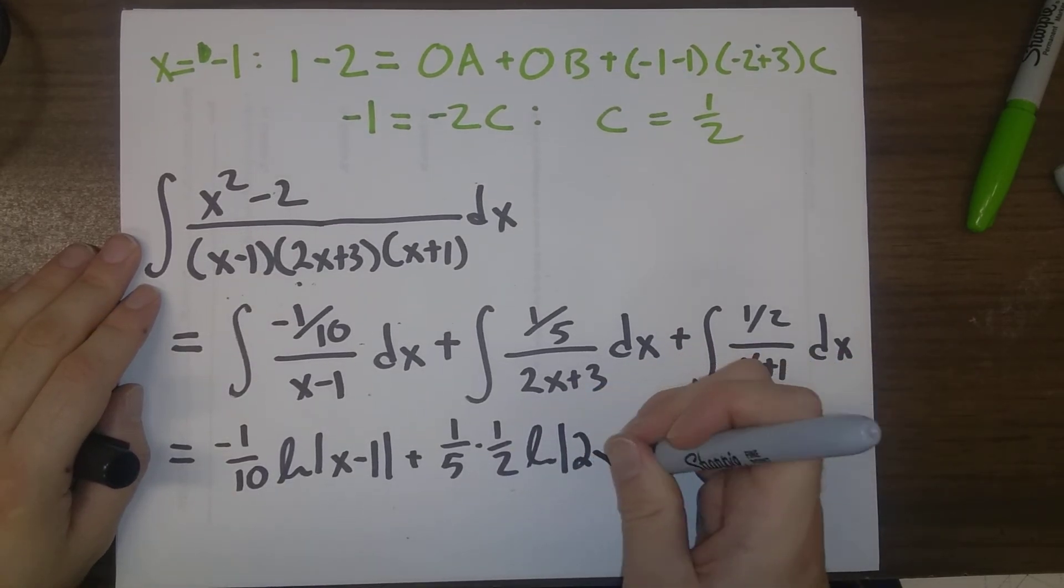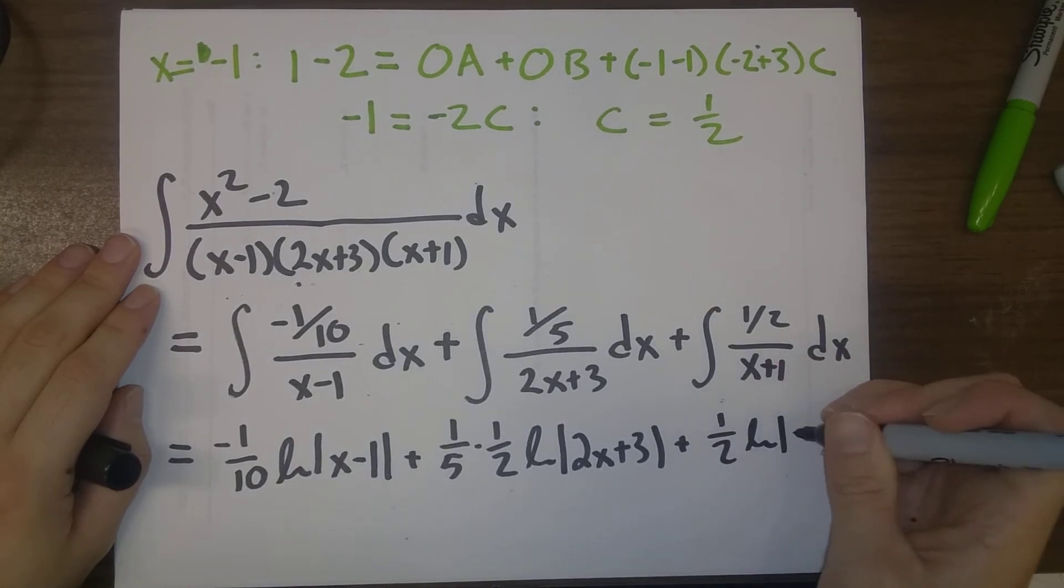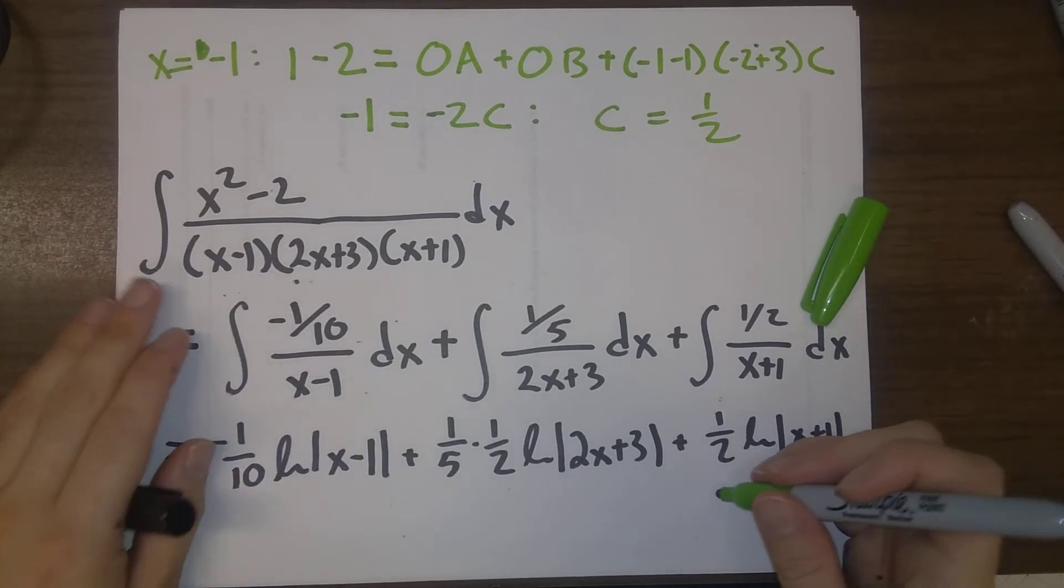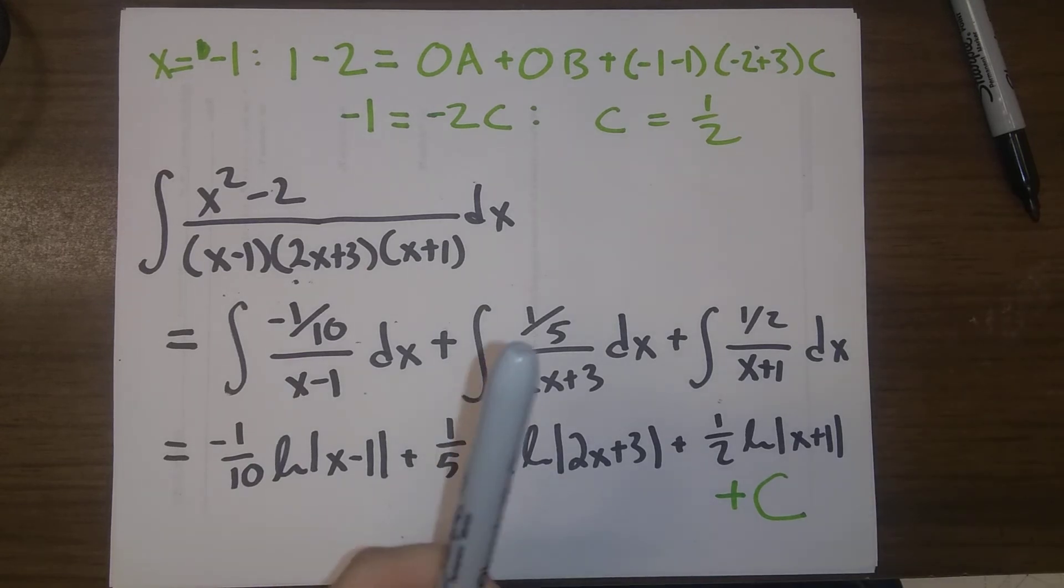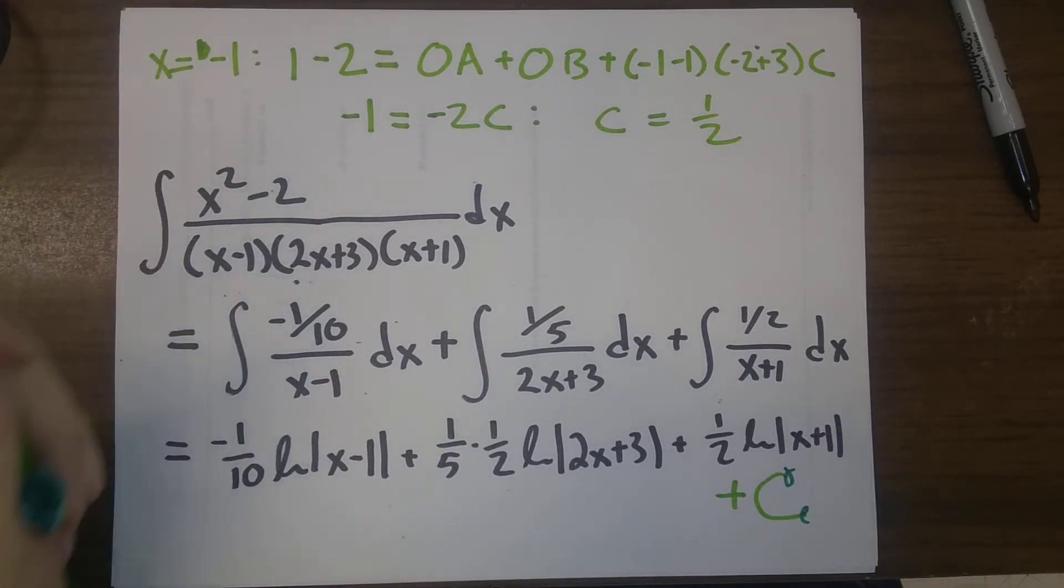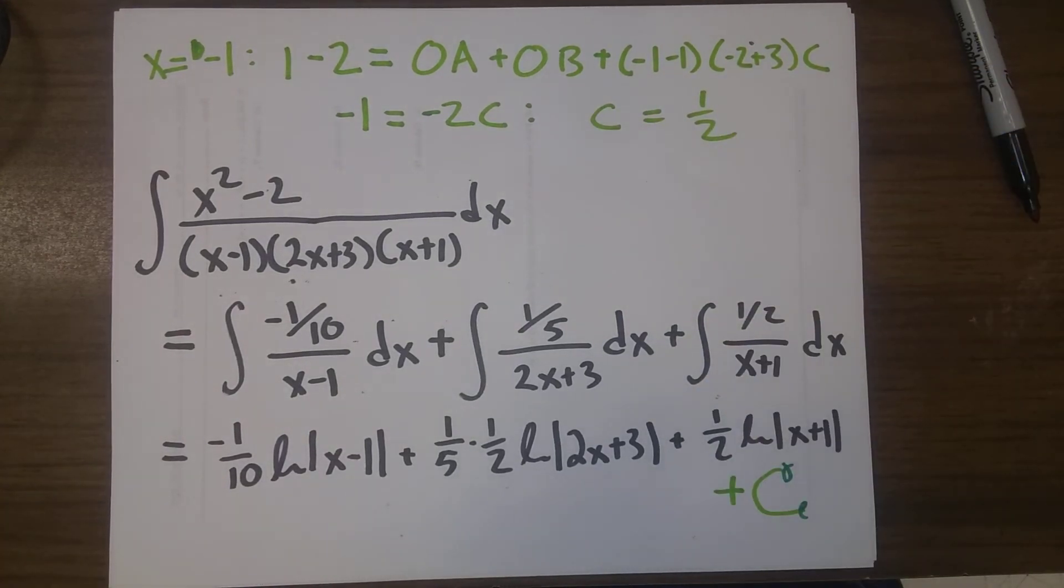You can check for yourself that this is what you end up with. Plus 1 half times natural log of absolute value of x plus 1. And don't forget your final plus C, where we make that a fancy C to make sure that we understand it's different from the preceding C.